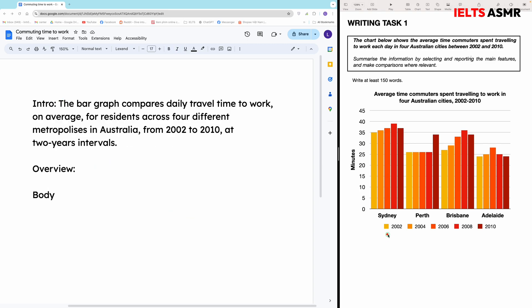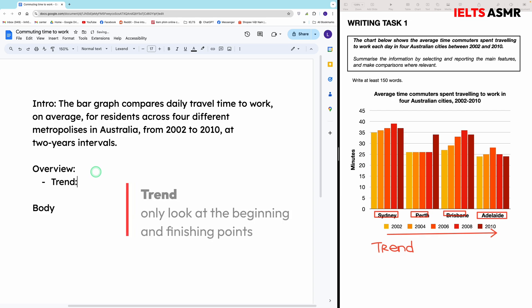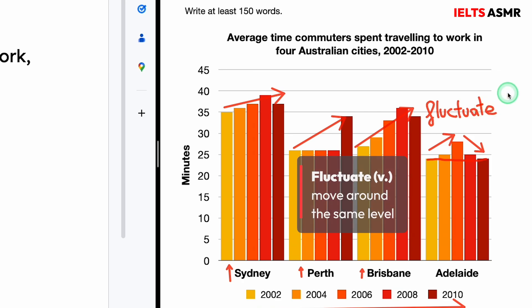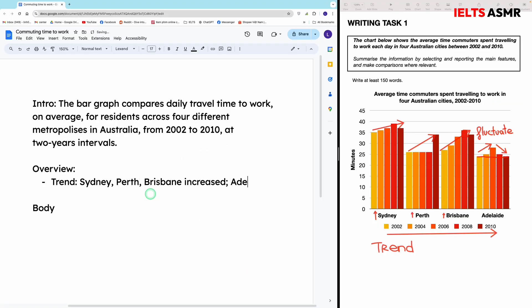Now for the overview. This is a dynamic chart which shows a period of time, and for this type of question, the most important feature you need to tell readers is the trend of every category. To figure out the trend, you only need to look at the beginning and finishing point of the categories. Sydney increased over the period, Perth increased, and Brisbane increased. For Adelaide, it didn't increase overall because the beginning and finishing points are the same. However, you should not say it remained unchanged because it actually changed in the middle — so describe it as 'fluctuate.'